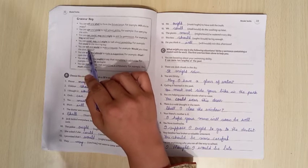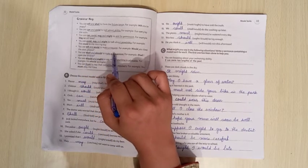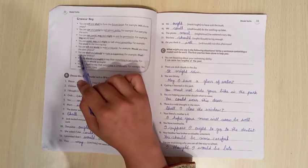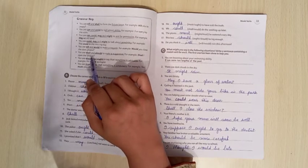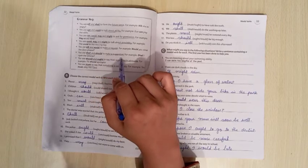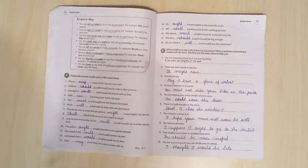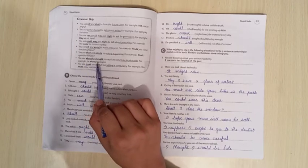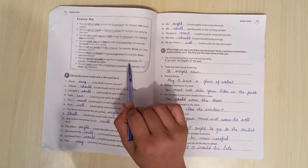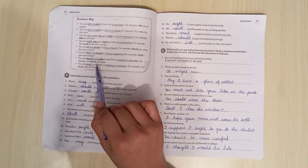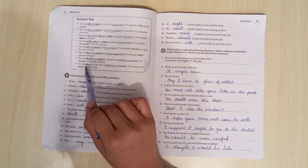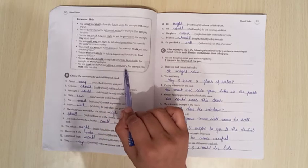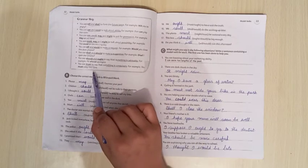You use will and would to make a request. For example, would you close the door please? Next, you use shall and should to make a suggestion. For example, shall I open the window? You use should and ought to say that something is advisable. For example, he should apologize. You use must to say that something is compulsory. For example, you must obey the rules.